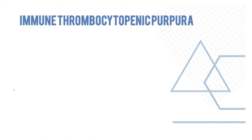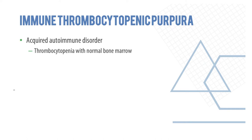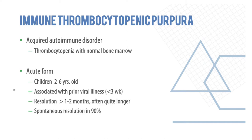Immune thrombocytopenic purpura (ITP) is an acquired autoimmune disorder with a normal bone marrow. It has an acute form and a chronic form. The acute form is common in children two to six years old, usually associated with a prior viral illness within three weeks of onset. It is self-resolving, settling down in one to two months, and in about 90% of patients it is a benign disease.